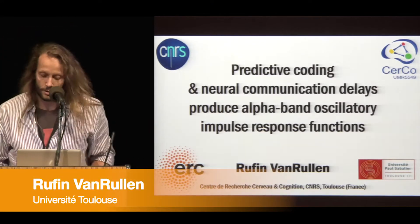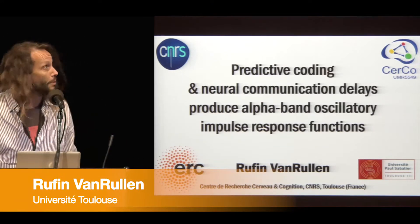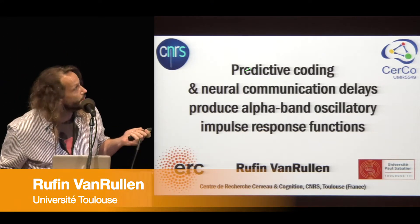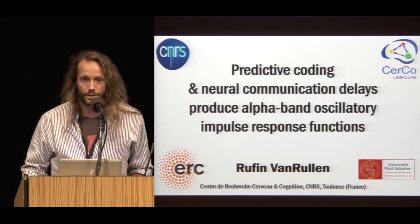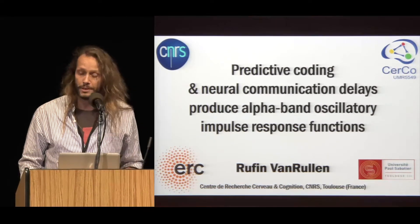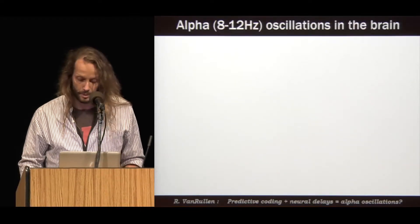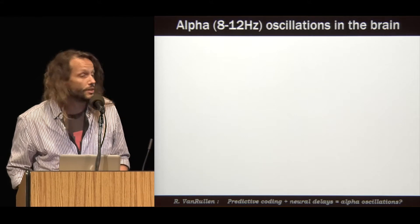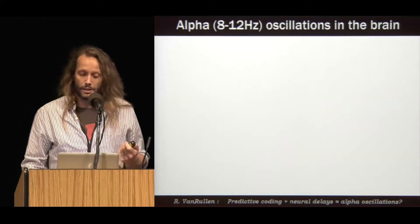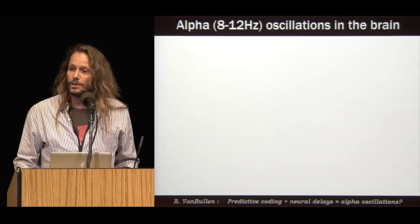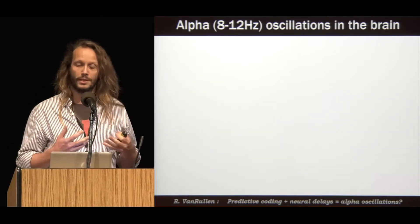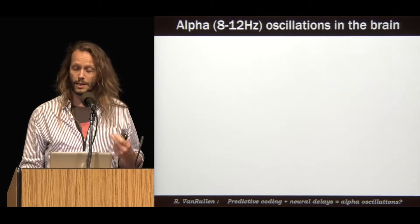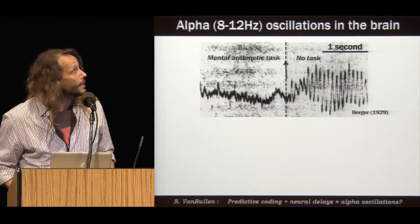Today I want to talk about the possible relation between predictive coding and brain oscillations. First, let me tell you about brain oscillations, and in particular alpha oscillations. The alpha rhythm is possibly the only oscillation that you can see in awake human EEG with the naked eye because it is so big.